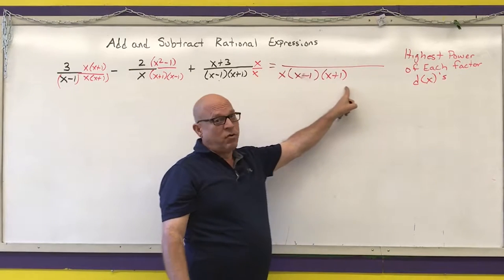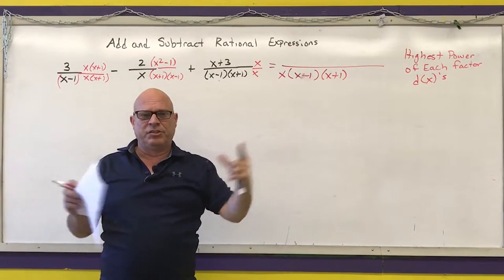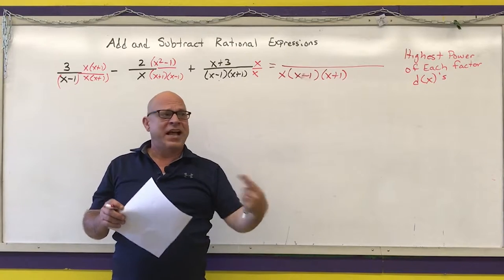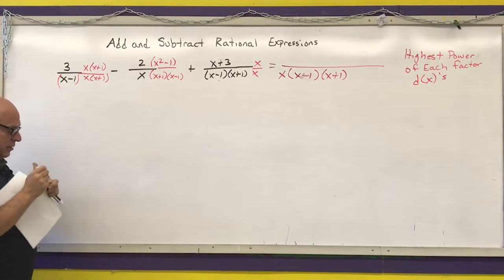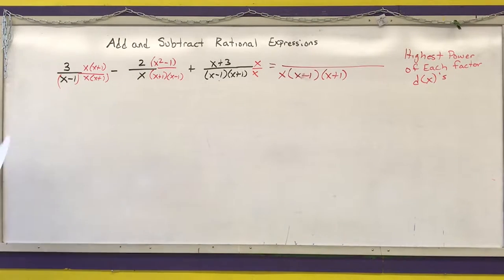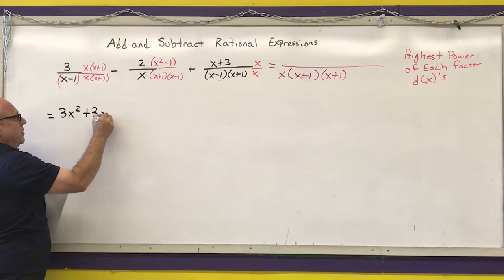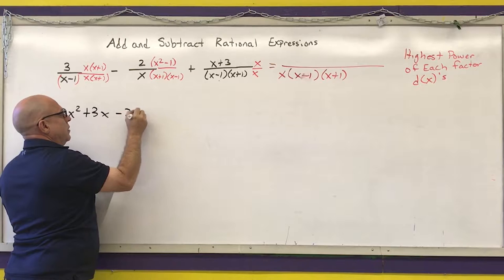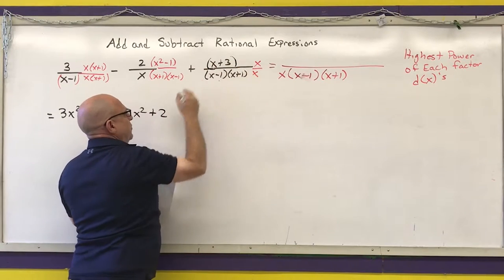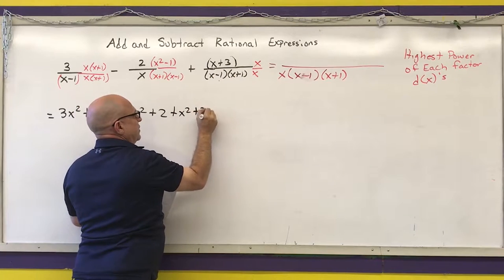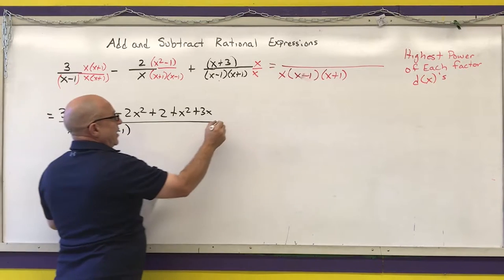I'll leave my denominator in factored form, but I do have to multiply out each numerator to perform the addition and subtraction, then combine like terms, and factor if possible to see if anything cancels. So: 3 times x times x is 3x squared, 3x times 1 is 3x, minus 2x squared, minus 2 times negative 1 is plus 2, minus 2x times 5 is minus 10x — wait, for the numerators: 3x squared plus 3x, then minus 2x squared plus 2, then plus x squared plus 3x, all over x(x plus 1)(x minus 1).